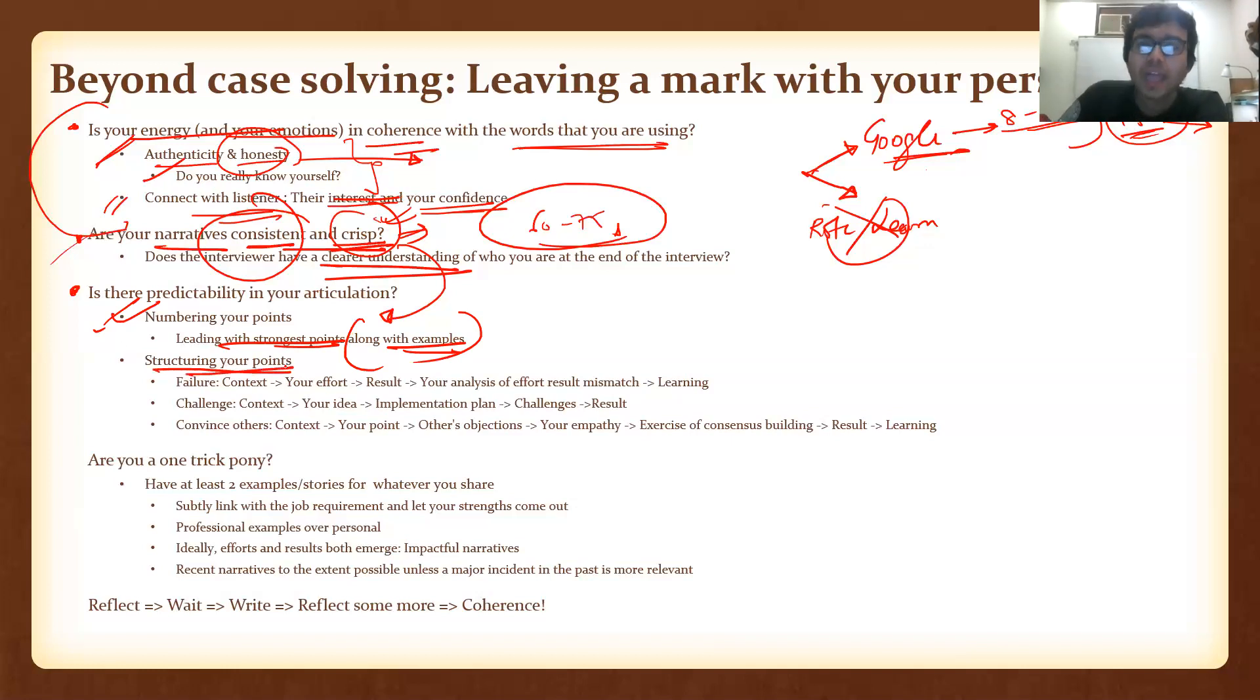Then it's structuring your points. Sometimes you're asked a lot of situational questions. So what I've done is I've picked three and I've just given how I would structure them. Let's say there's a question about failure: context, effort, result, analysis of the effort-result mismatch which is essentially the failure, and the learning that came out of it. Ending with the learning. Very important.